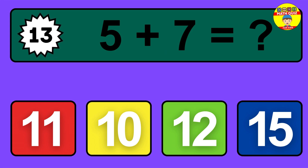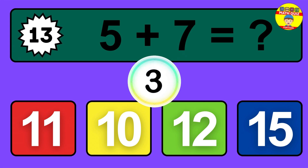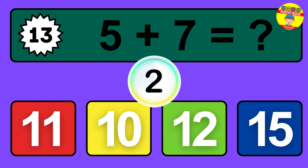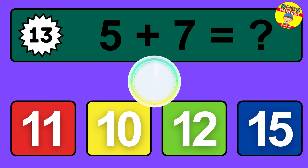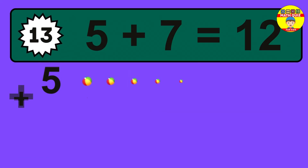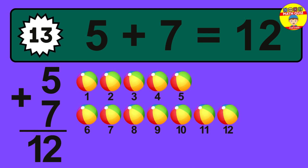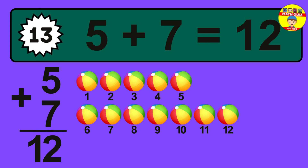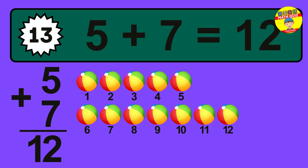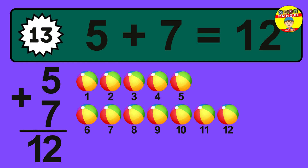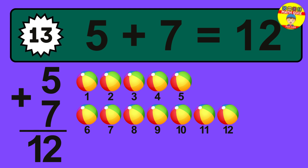Question 13. 5 plus 7 equals what? The answer is 5 plus 7 is 12. Let's count it: 1, 2, 3, 4, 5, 6, 7, 8, 9, 10, 11, 12.